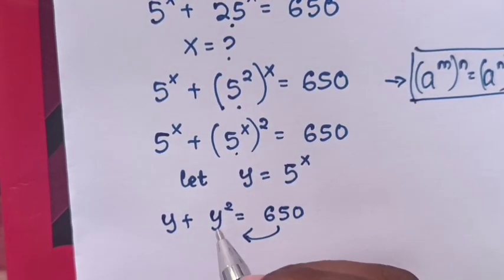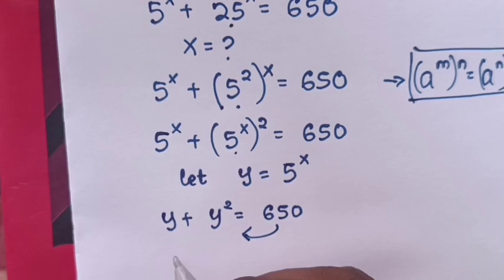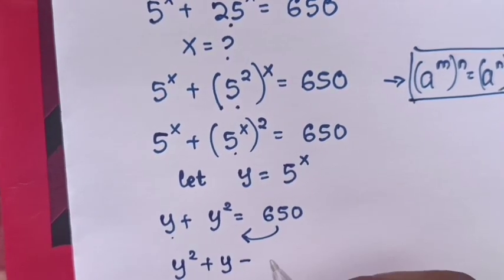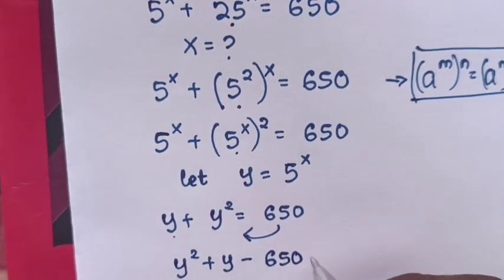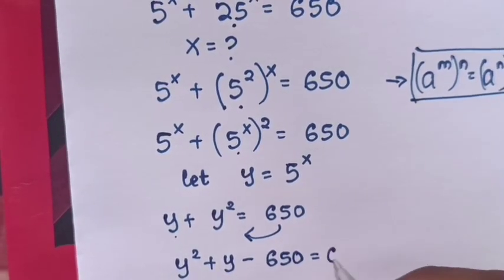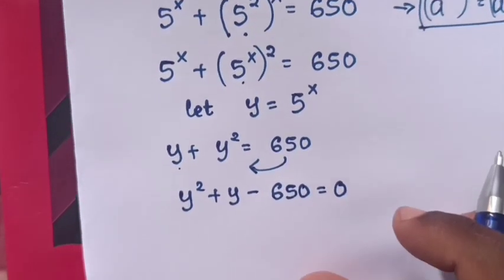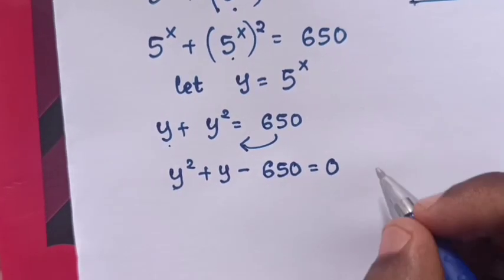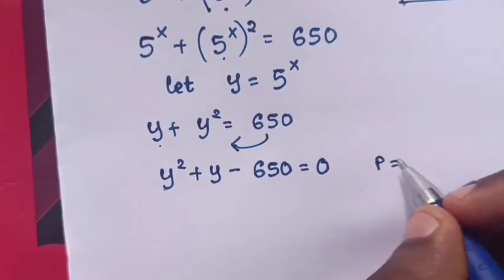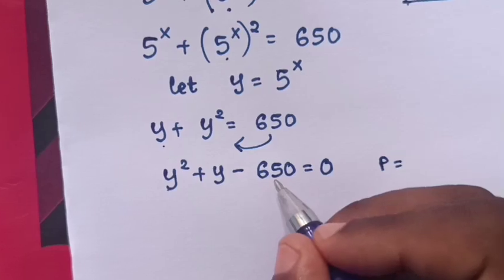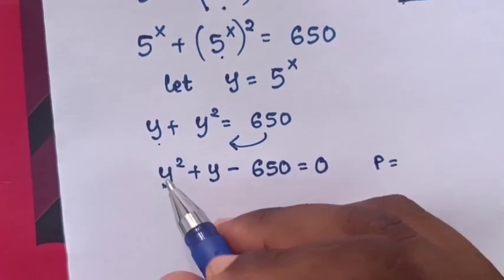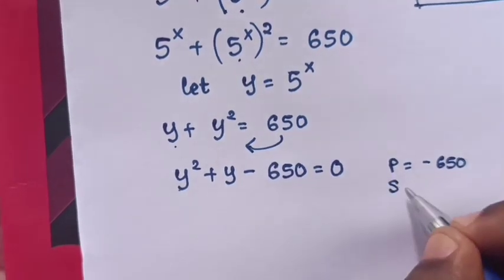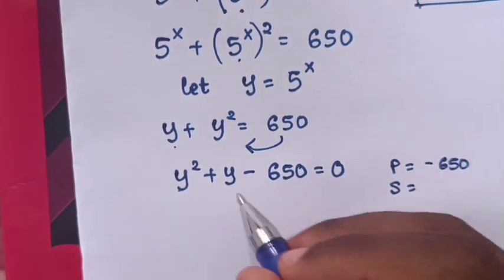We take 650 to the left side, so it becomes y² + y - 650 = 0. Then we factorize this quadratic equation, where the product is -650 × 1 = -650, and the sum is 1.